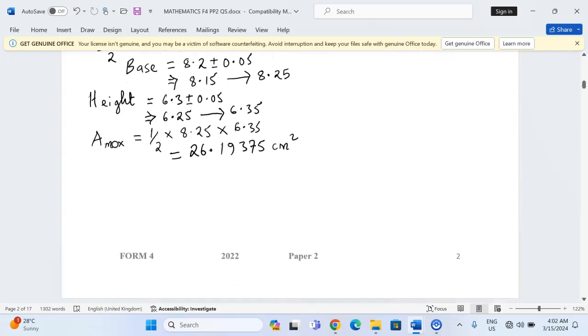Then now we can go for area minimum. The minimum area is going to be half, which is a constant, multiplied by the minimum or the lower limit of the base, 8.15, multiplied by the lower limit of the height, 6.25.